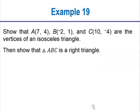Now we have a problem. We want to show that point A (7,4), point B (-2,1), and point C (10,-4) are the vertices of an isosceles triangle. Then show that triangle ABC is a right triangle. We've got some work to do here. First of all, we're trying to show this is an isosceles triangle. What's the definition of an isosceles triangle? We know that two sides are the same length.